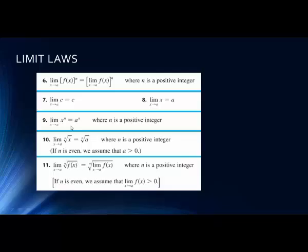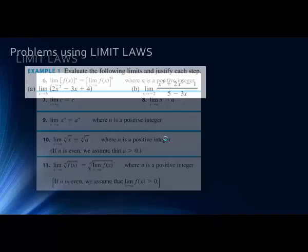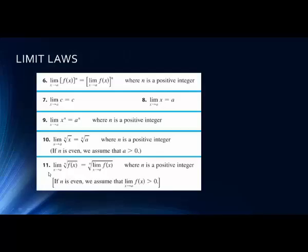The limit as x goes to a of the nth root of x equals the nth root of a — again, for a positive integer. If we're applying the limit of the nth root of f(x), we can take the nth root of the limit of that function, so we can apply it inside. Both of these rules note that if it's an even root, we're talking about real numbers, so everything inside the even root must be positive. We can't take a square root of a negative number, and we're not talking about imaginary numbers — not yet anyway.